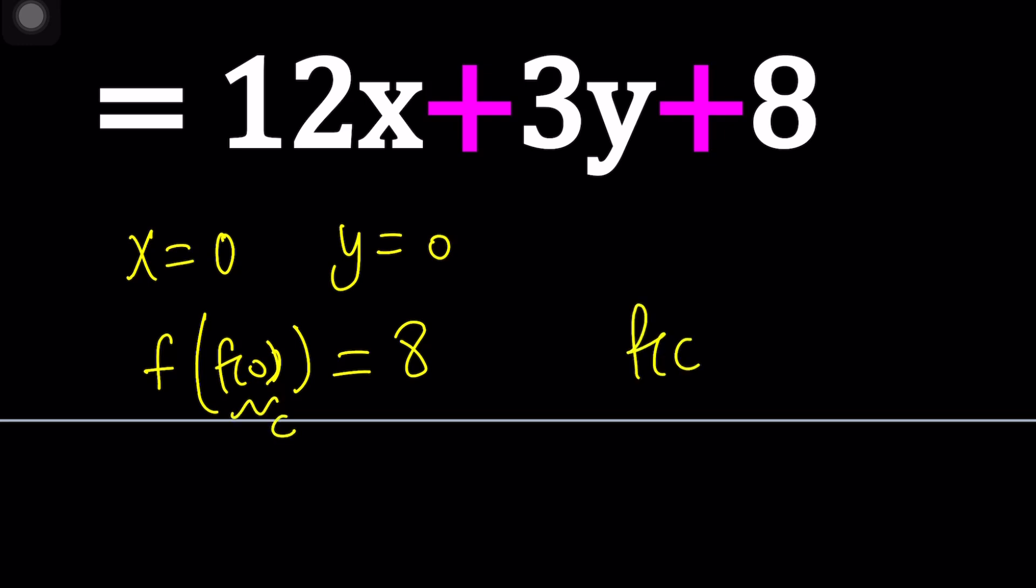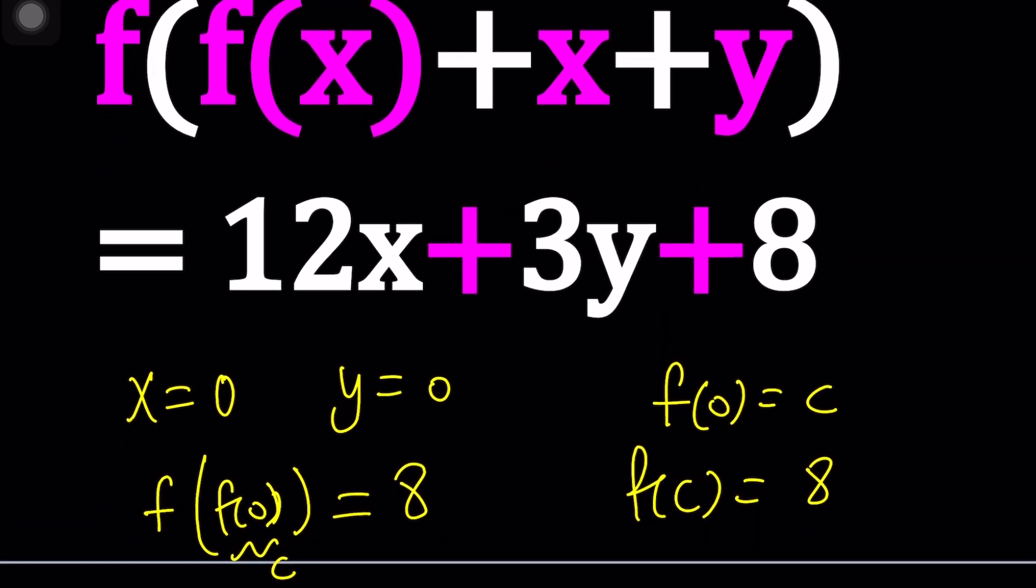You can go ahead and call f of 0 c if you want. And this will tell you, okay, f of c is 8 if f of 0 is called c. It's kind of like two points on the graph.